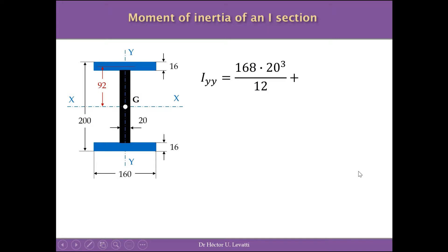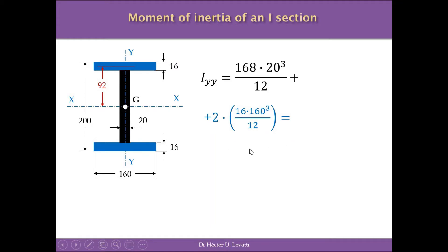For the moment of inertia about the vertical axis Y, the procedure is similar. The web contributes 168 × 20³ / 12. Since the Y-axis is barycentric for both the web and the flanges, no parallel-axis term is needed. For the two flanges: 2 × (16 × 160³ / 12). The resulting moment of inertia about axis Y is 11,034,667 mm⁴.